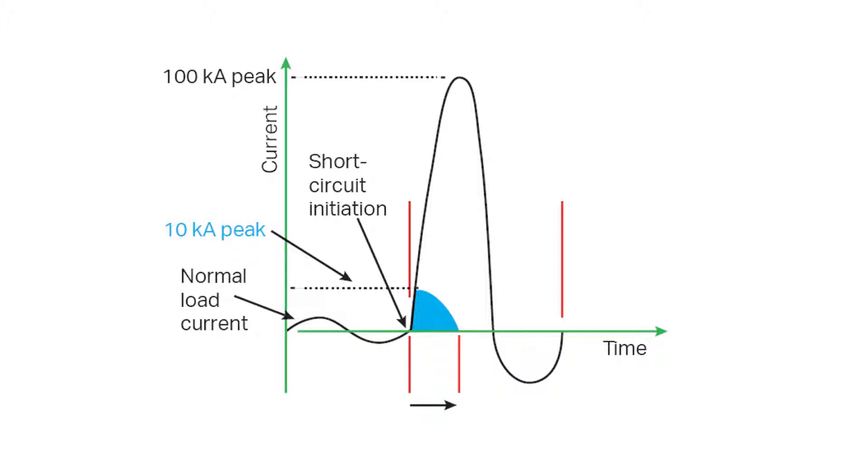In the first major fault current cycle, depicted by the waveform, a non-current limiting overcurrent protective device would let through approximately 100 times as much destructive energy as a current limiting fuse. This is assuming an asymmetrical peak current of 100,000 amps and a peak let-through current of 10,000 amps.